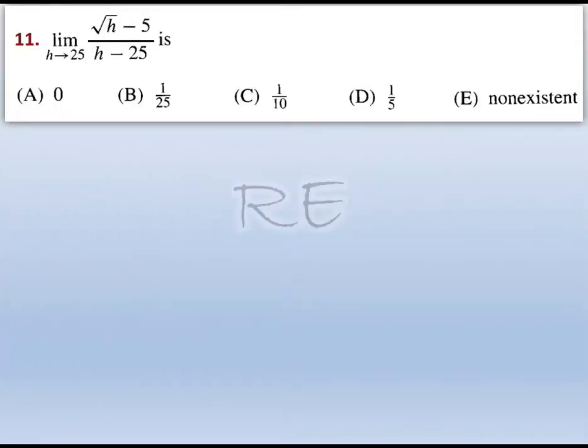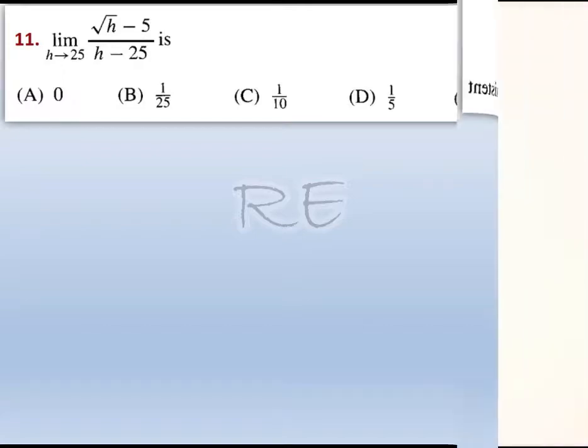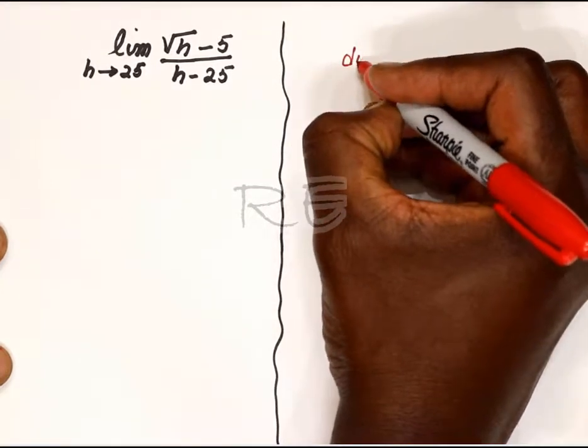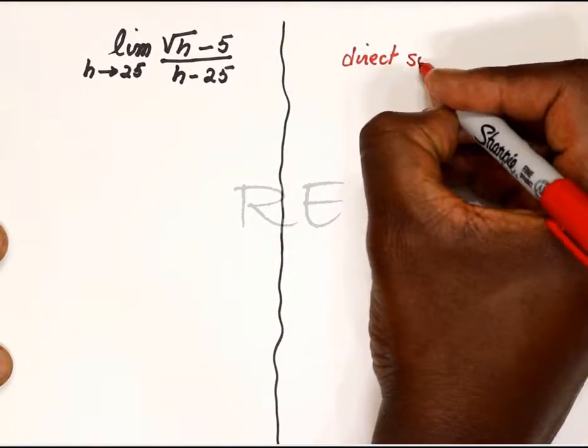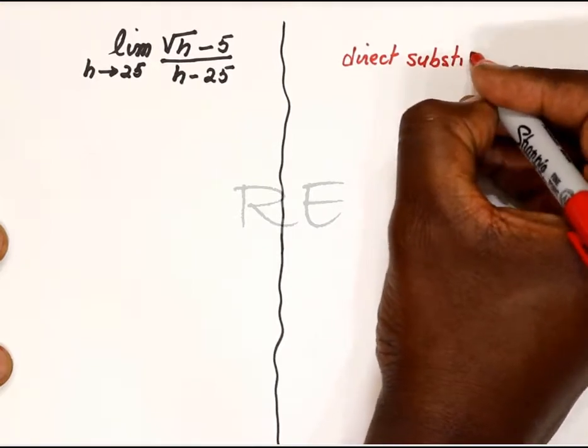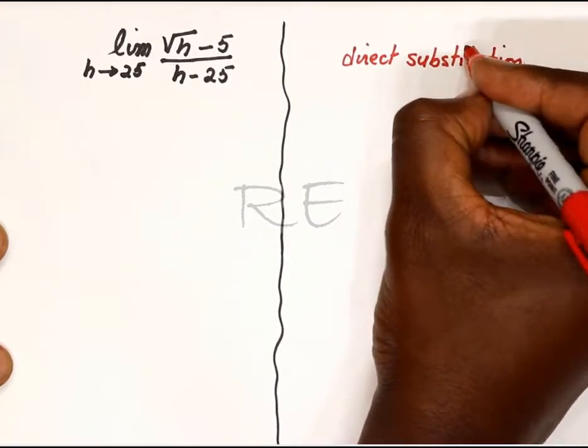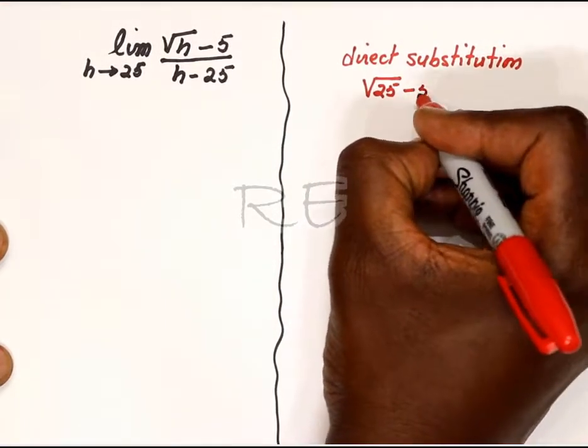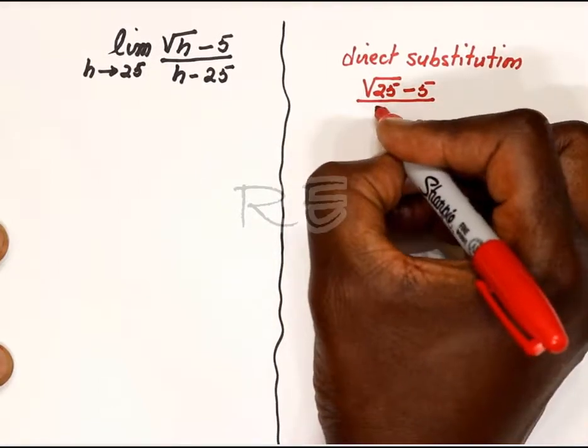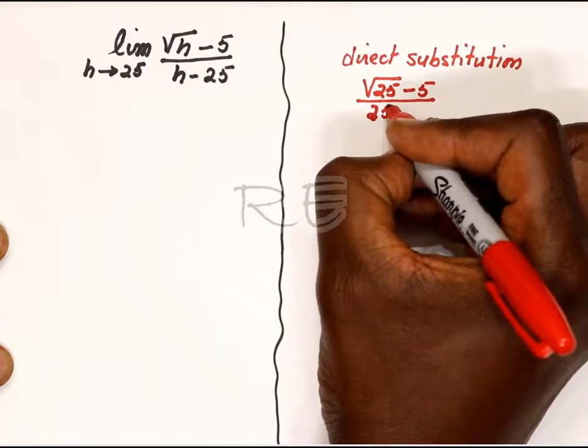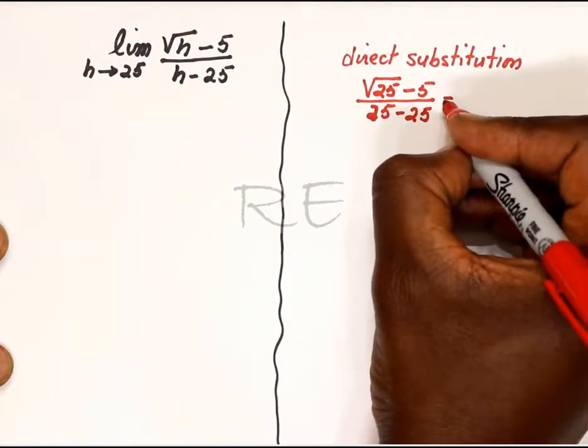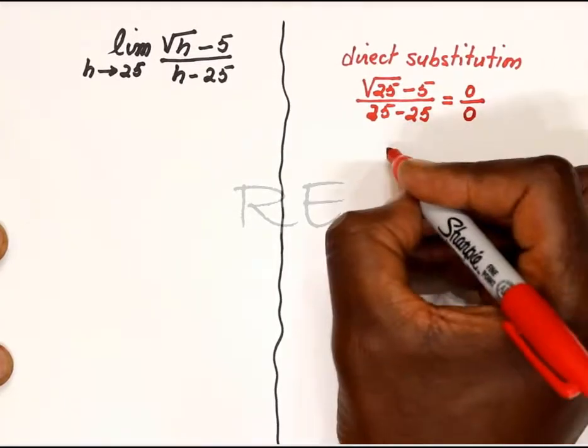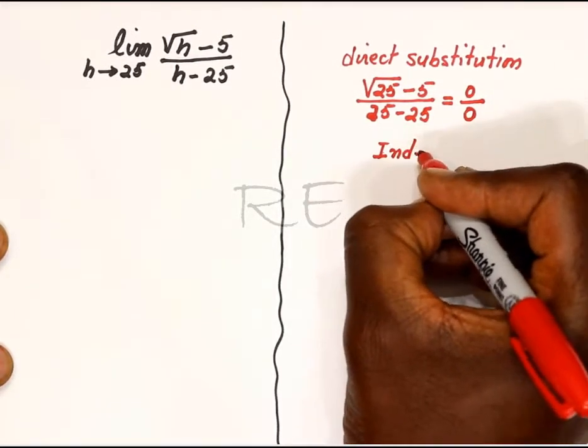Question 11 deals with a limit. As usual, we're going to try direct substitution. If it works, our job is done, but usually it doesn't work. Let's see: square root of 25 minus 5 divided by 25 minus 25. It's 5 minus 5, which is 0 over 0, so it doesn't work.